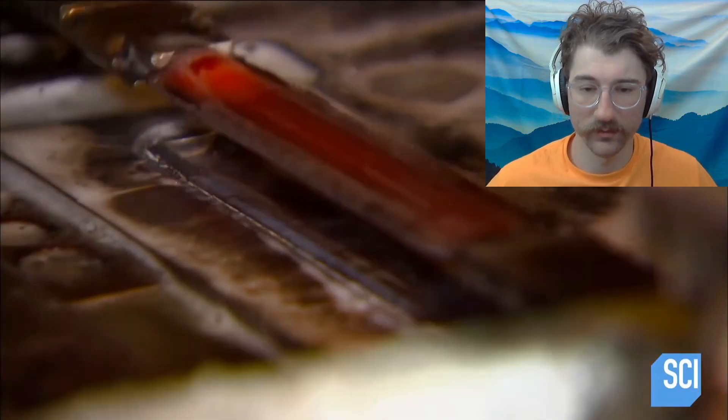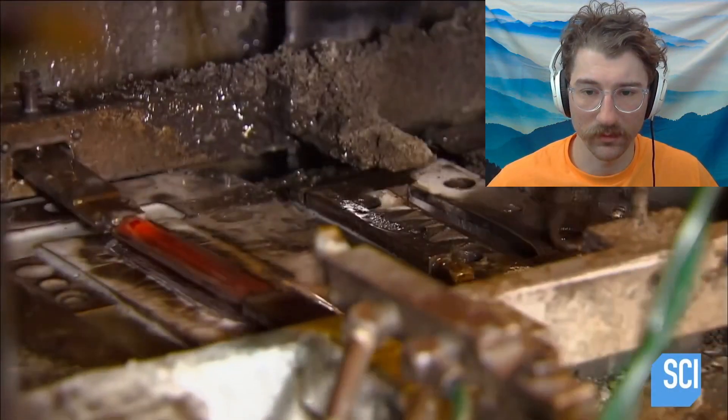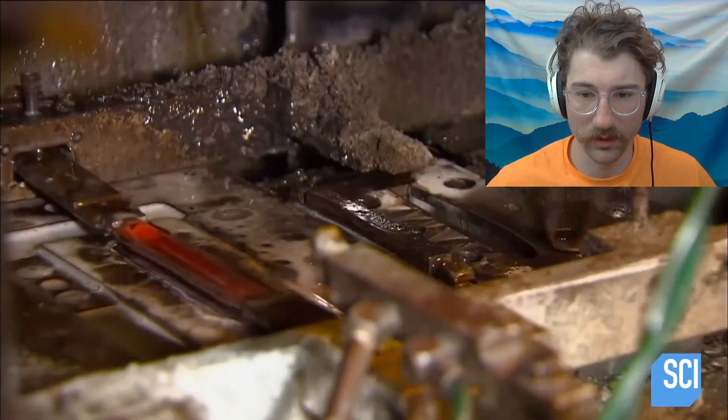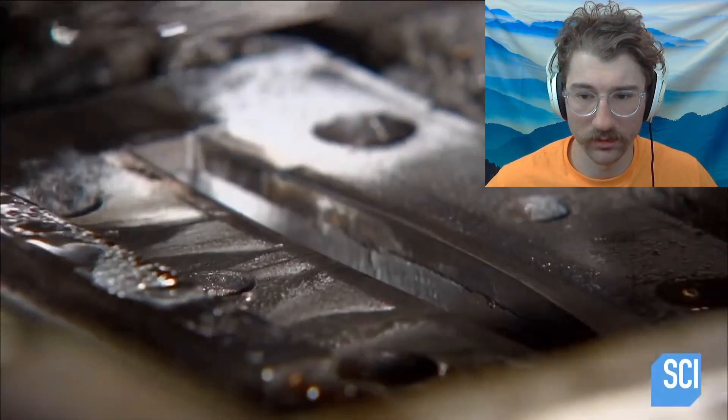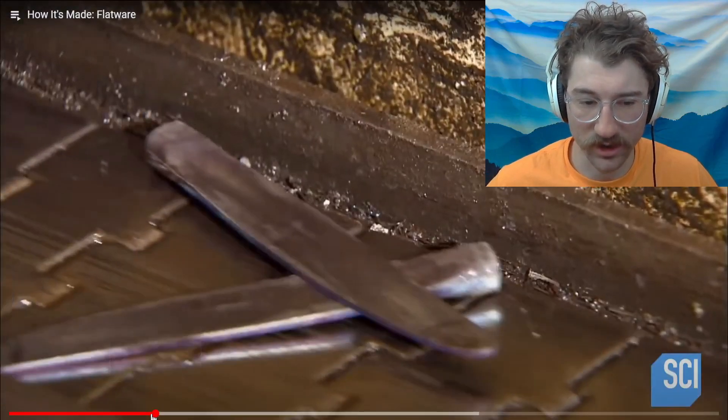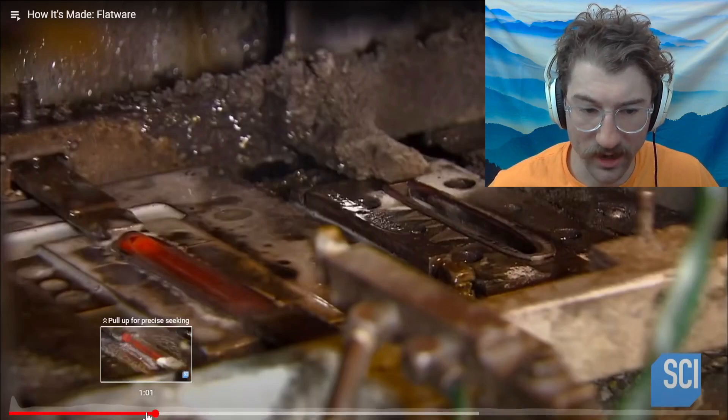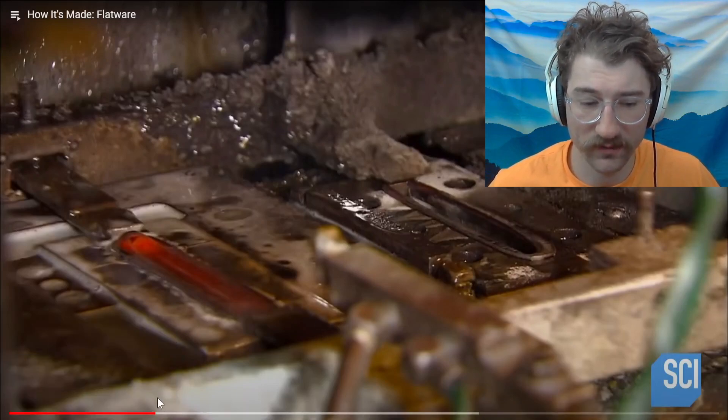A series of dies progressively shape the metal. Okay, here we go. So that's a really awesome view of how the die actually works, or at least the negative side of it.